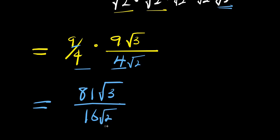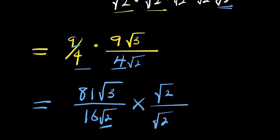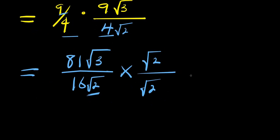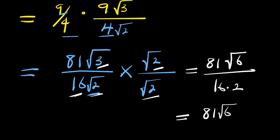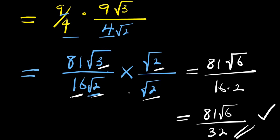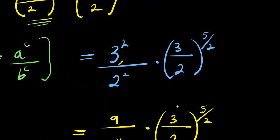Now we are going to rationalize this denominator by multiplying numerator and denominator by √2. So from here, this gives us 81 times √3 times √2 — that is √6 — divided by 16√2 times √2, which is √4 = 2, so 16 times 2 equals 32. So the final answer is 81√6 divided by 32. We cannot simplify 81 and 32 further, so we leave it this way. This is our final answer. I believe you have enjoyed this video — don't forget to subscribe and share. Thank you and goodbye.